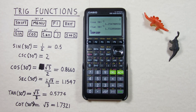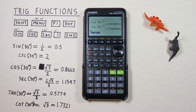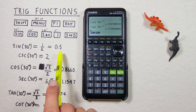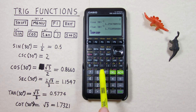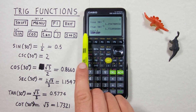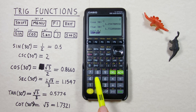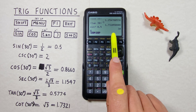We can also find arc sine, arc cos and arc tan on this calculator. That's useful for going from the result backwards to find out how many degrees were used in our initial calculation. So if we want to find out how many degrees were used to get 0.5, we use shift and sine, which gives us sine to the minus 1 — that's different from when we were doing cosecant. We enter 0.5, hit EXE, and see we get 30 degrees.